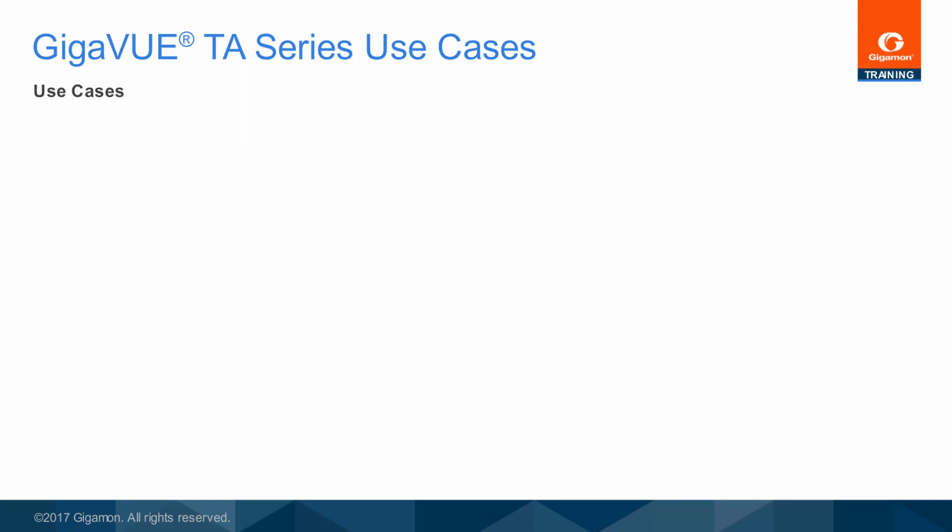The primary use case for a Gigaview TA series node is that of aggregation. With the heightened awareness of security needs inside the network and the vastly higher bandwidth within the network versus perimeter link bandwidth, it is clear that instrumenting all low utilization links is not cost effective.